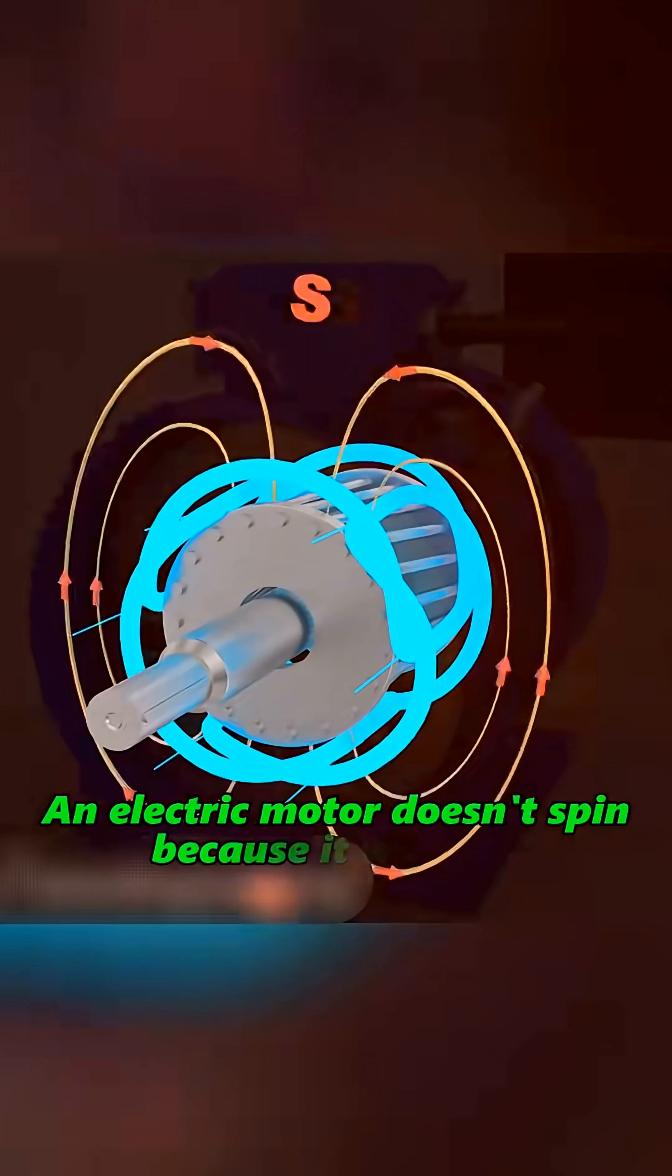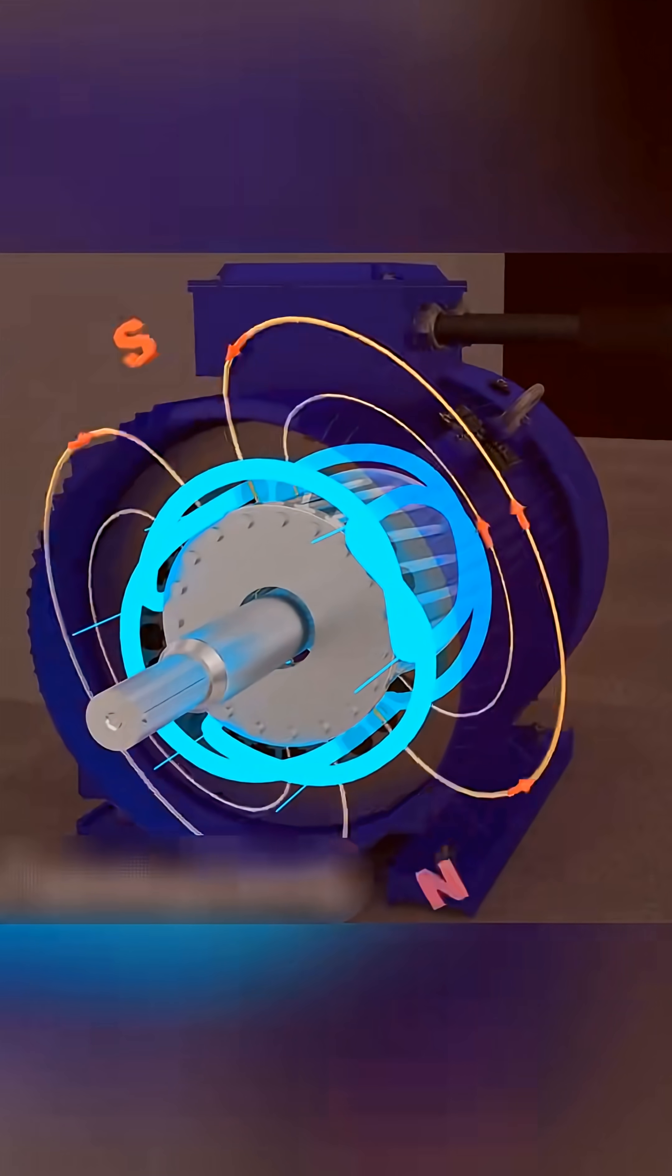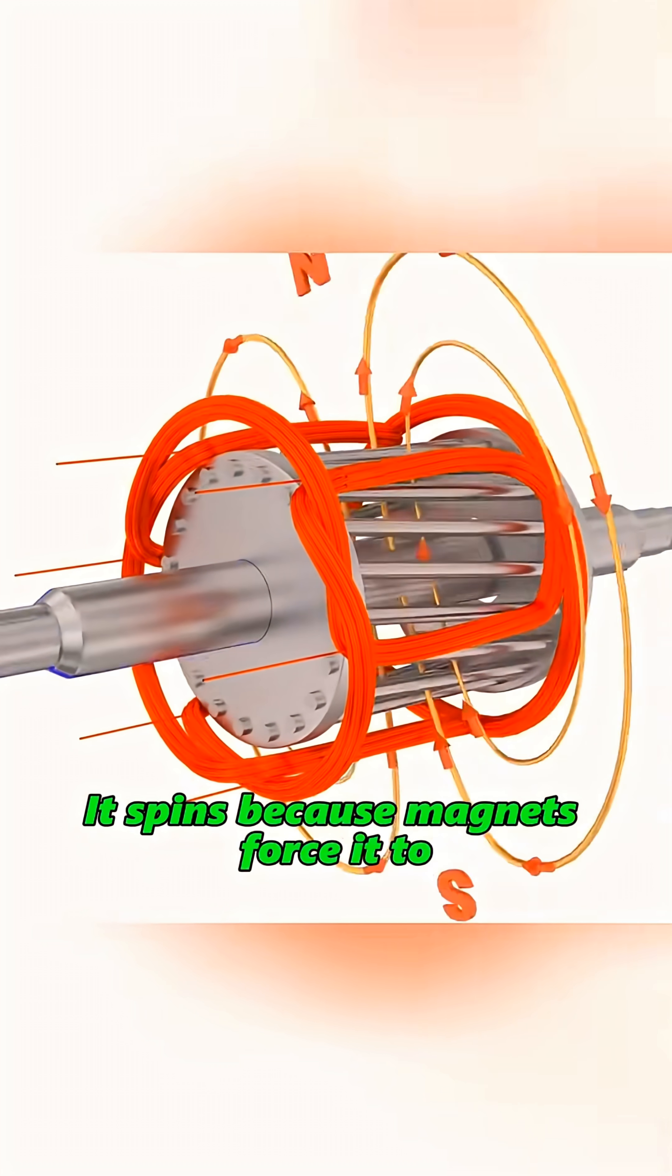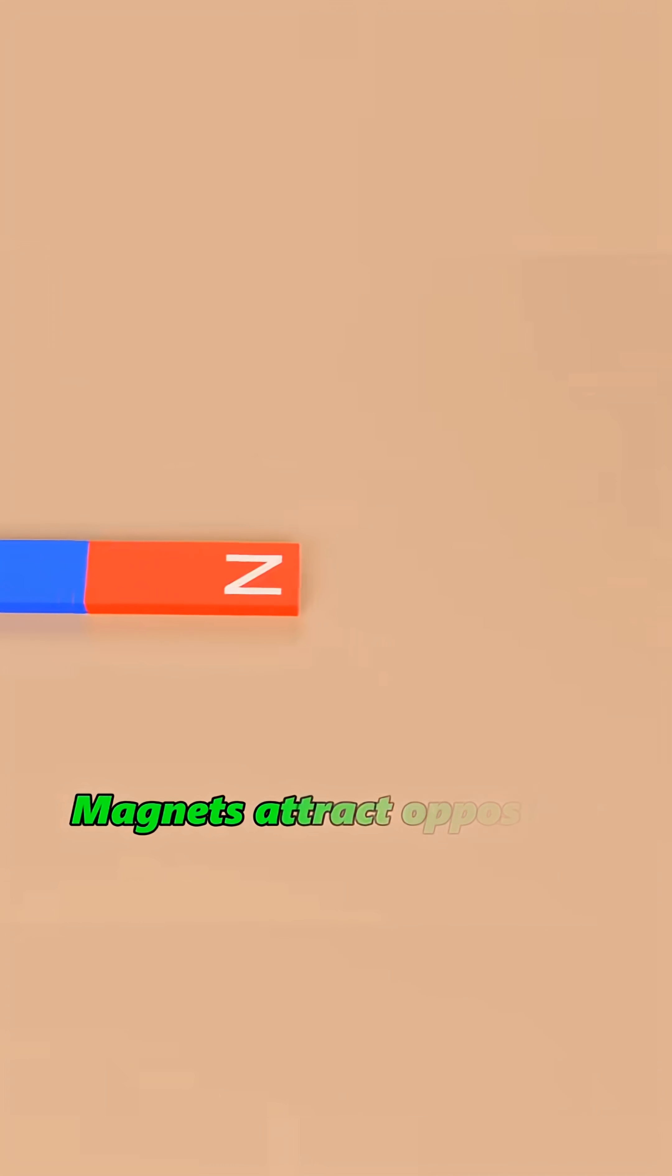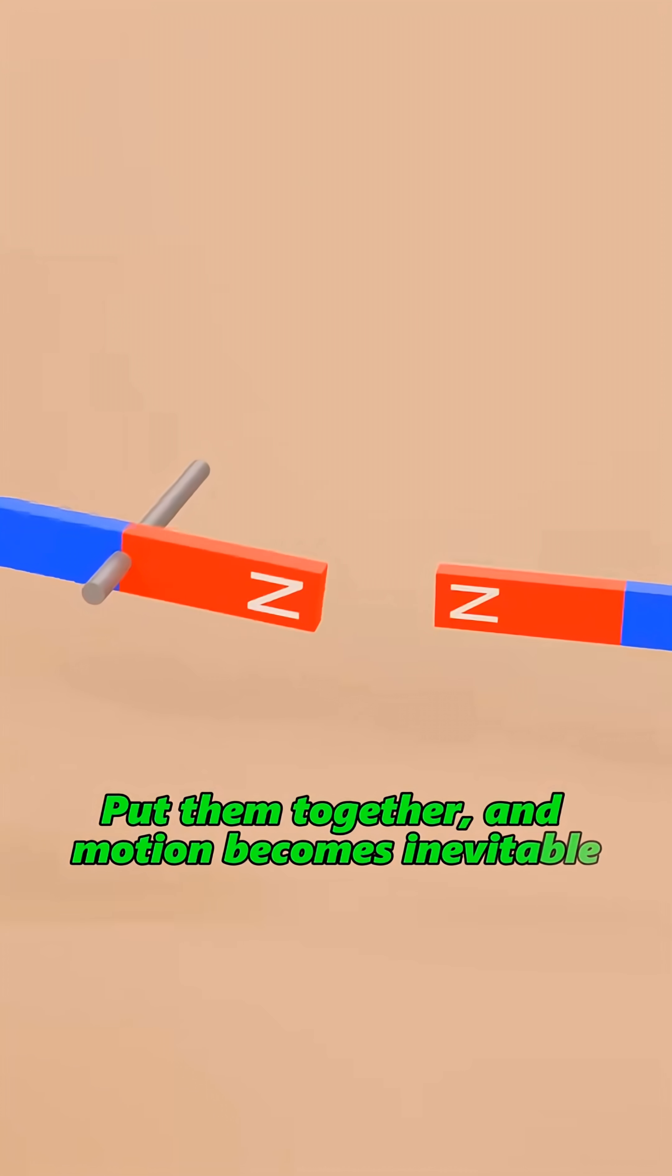Can you believe it? An electric motor doesn't spin because it wants to. It spins because magnets force it to. Two truths run the universe: current only flows in loops, magnets attract opposites and repel their own kind. Put them together and motion becomes inevitable.